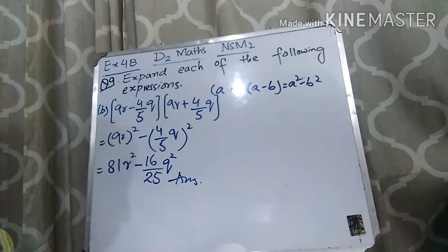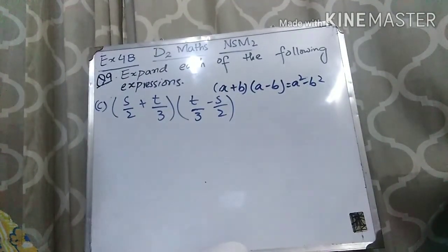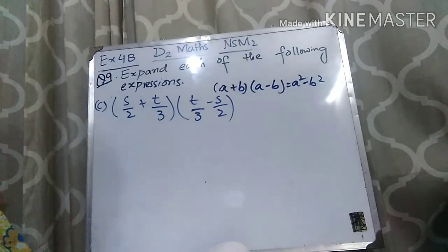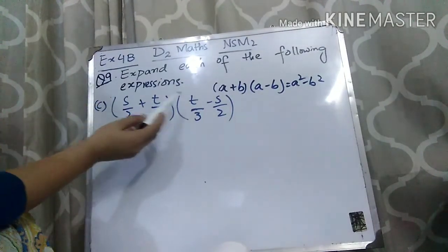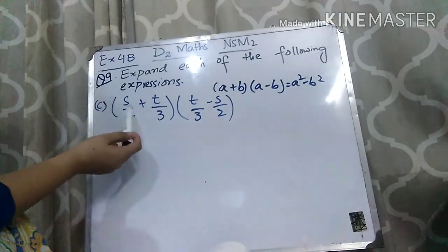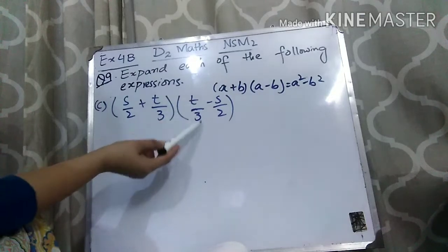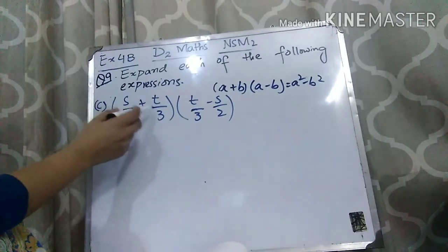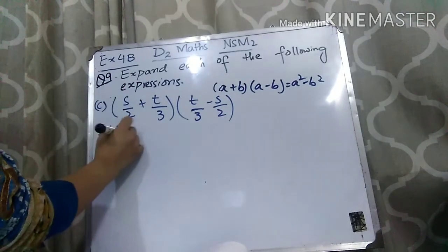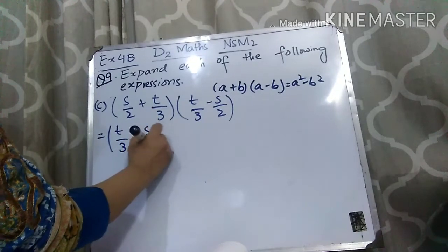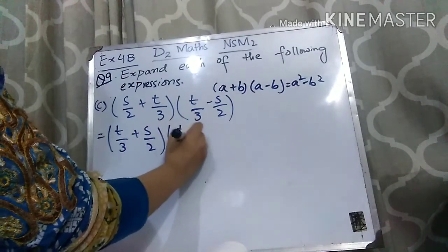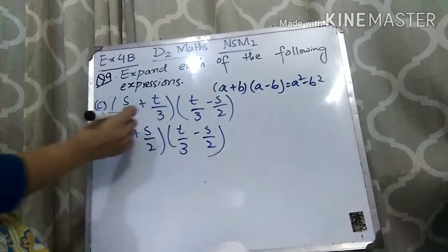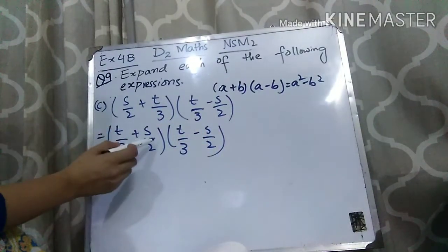I hope that Part B is clear to you. Now let's move forward to Part C. Part C is (S/2 + T/3) and (T/3 − S/2). Here in the first bracket, A is S/2 and B is T/3, but the positions need rearranging. Since both numbers have a plus sign, we can write the first bracket as (T/3 + S/2), and the second bracket stays as (T/3 − S/2). So A is T/3 and B is S/2.